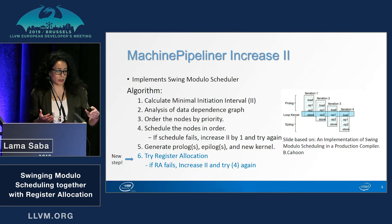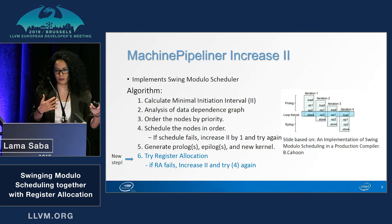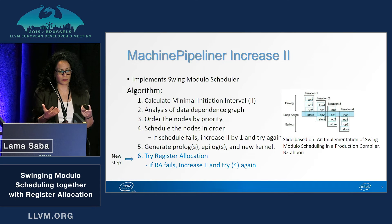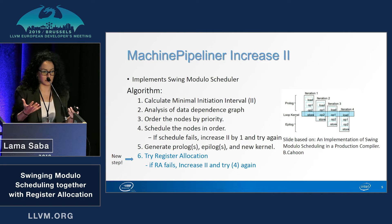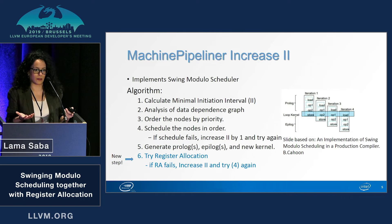We could actually go back to step three and try different ordering if we don't want to increase the II and decrease the throughput.